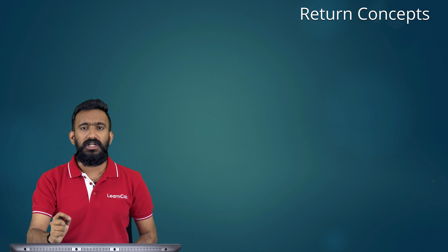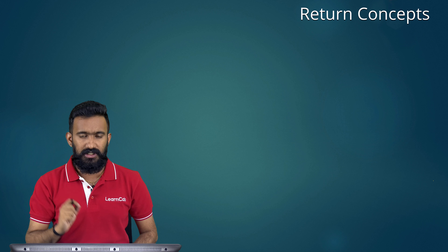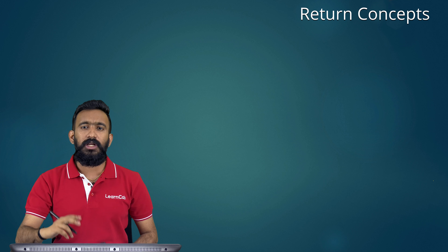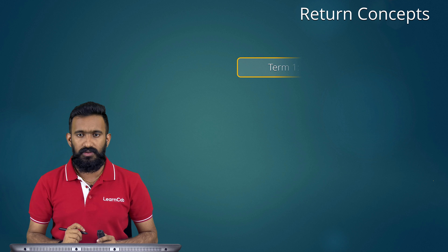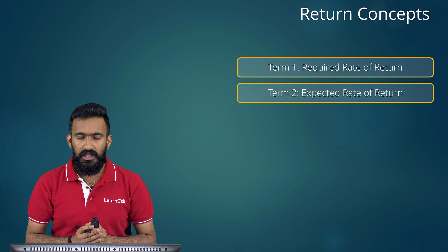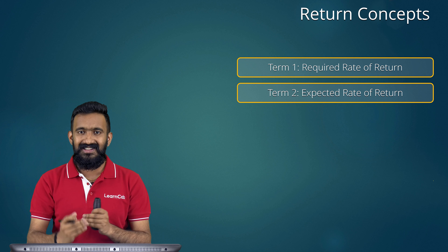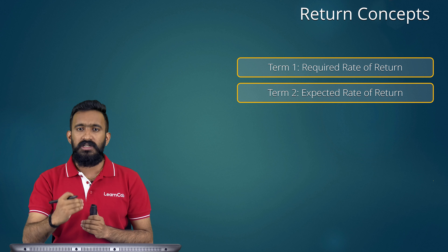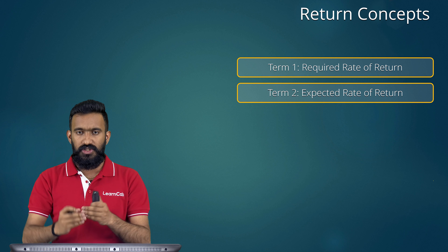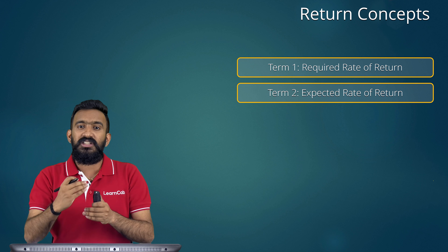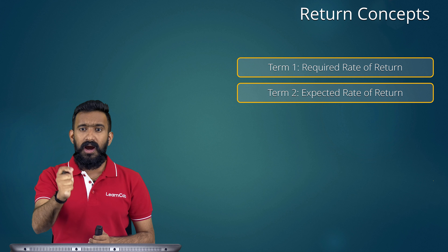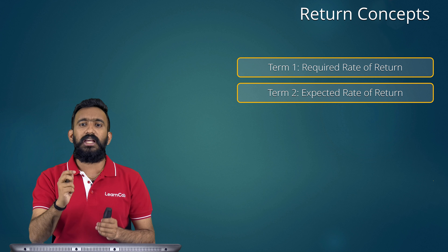Now let me move to the next set of concepts: the return concepts. In any security valuation, you come across two types of returns frequently. One is called the required rate of return, and the other is called the expected rate of return. Going forward, I am going to number each term and formula that we discuss, so that at the end we can summarize everything. Term one is required rate of return and term two is expected rate of return.